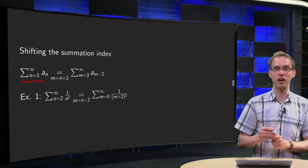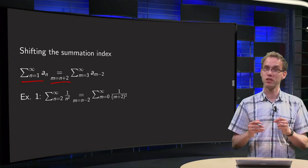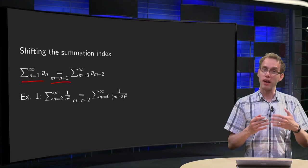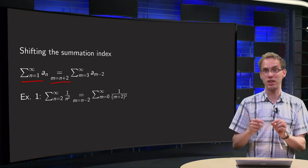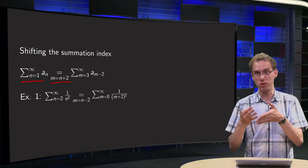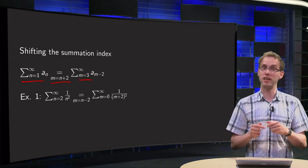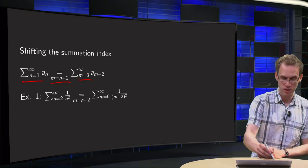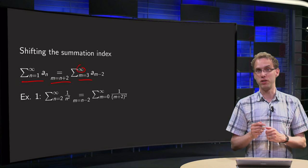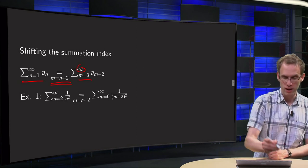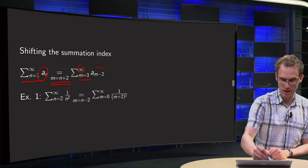Suppose we have some summation starting at n equals 1. Then I can choose a different summation index, for example capital M equals n plus 2. If I choose this new summation index m, then m starts at 3, because n starts at 1, so m equals n plus 2, so 1 plus 2 equals 3. And if n runs up to infinity, then m also runs up to infinity. Remember to adjust the elements of the sequence accordingly: m equals n plus 2, so n equals m minus 2, so a_n becomes a_{m minus 2}.